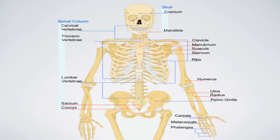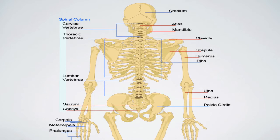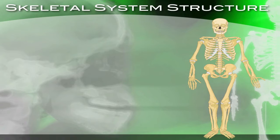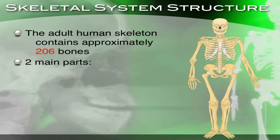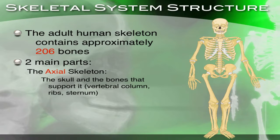Remember, the first part of your test will have a blank version of what you see on the screen, and you are responsible for filling in the blanks. Now let's talk about the skeletal system structure. The adult human skeleton consists of approximately 206 bones. There are two main parts: the axial skeleton, which includes the skull, vertebral column, ribs, and sternum.